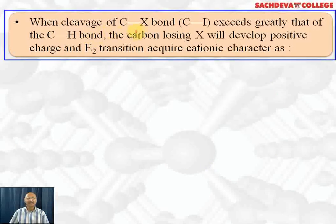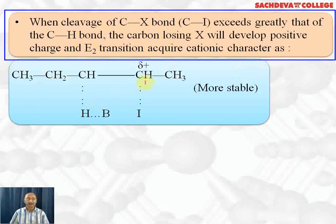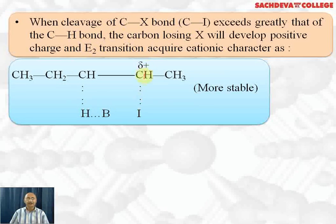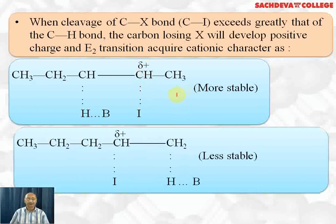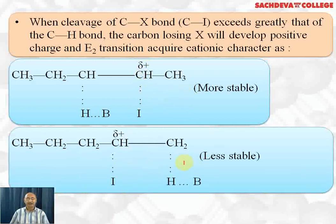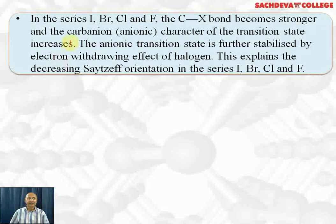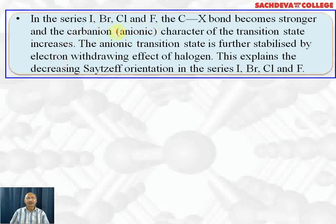When cleavage of the C–X bond (e.g., C–I bond) greatly exceeds that of the C–H bond, the carbon losing X develops a positive charge and the E2 transition state acquires cationic character. In the series I, Br, Cl, F, the C–X bond becomes stronger and the carbanion character of the transition state increases. The anionic transition state is further stabilized by the electron-withdrawing effect of halogens. This explains the decreasing Zaitsev orientation going from I to Br to Cl to F — in fluorides, Zaitsev orientation does not take place and 1-pentene is the major product.